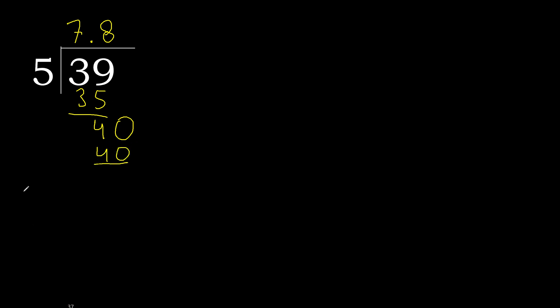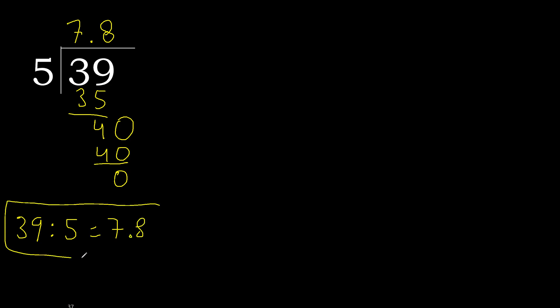5 multiplied by 8 is 40 — is not greater. 40 minus 40 is 0. Therefore, 39 divided by 5 is finished.